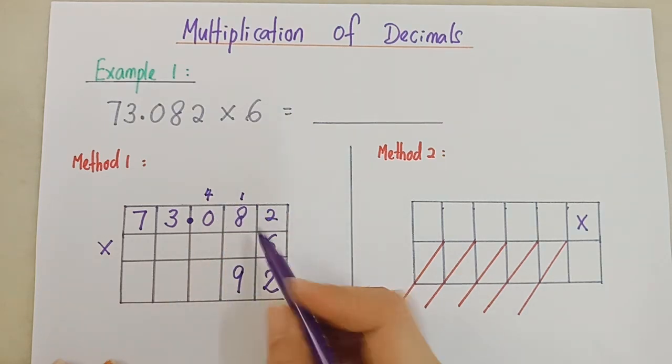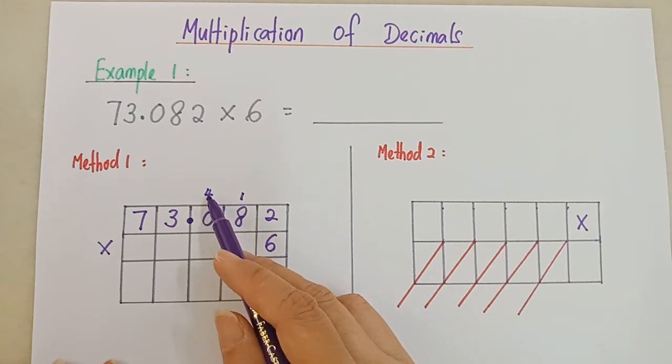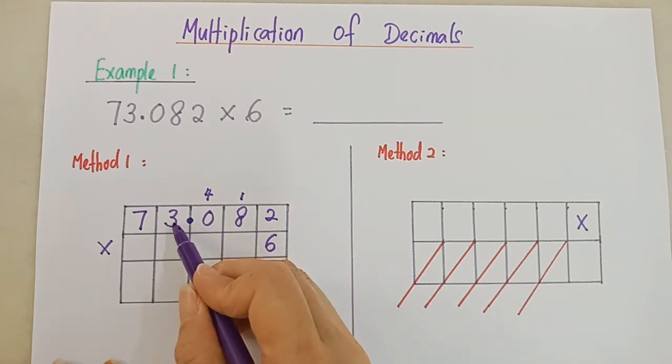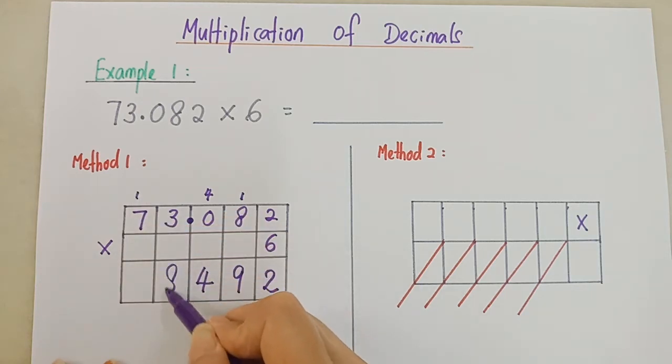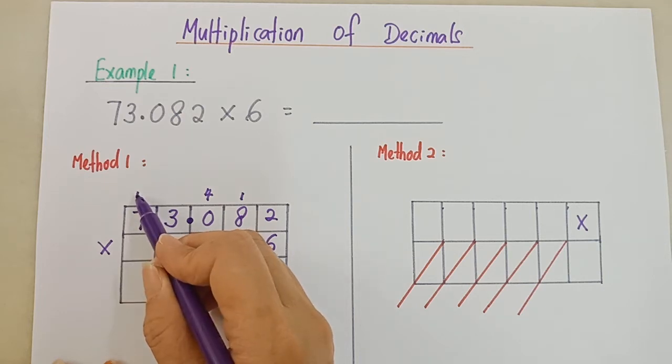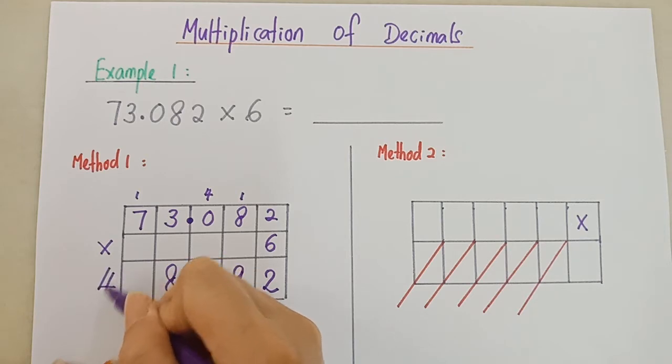6 times 0 is 0, 0 plus 4 is 4. 6 times 3 is 18, so we write like this: 1, 8. 6 times 7 is 42, plus 1 is 43, right? So I write like this: 43.